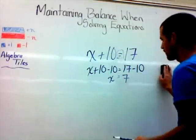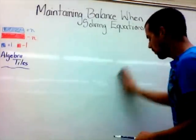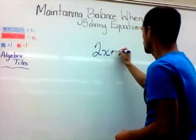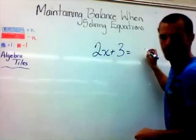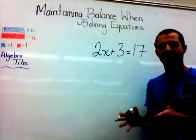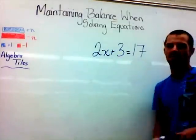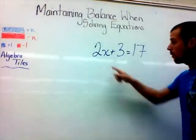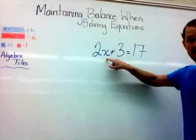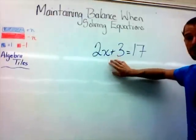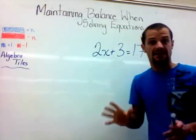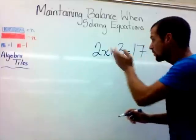What if we ramped things up a little bit? What if I gave you an equation like 2 times a number plus 3 equals 17? Again, 17 is the balanced number we're looking at. We want to isolate and solve for x. x is going to stay on this side of the equal sign, and for everything we get rid of over here, we have to get rid of it over there. That's the key — that's the secret to success.